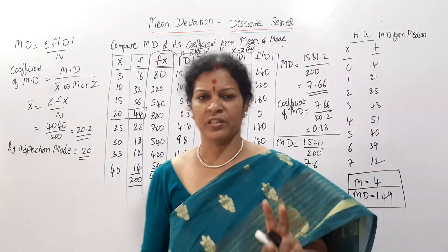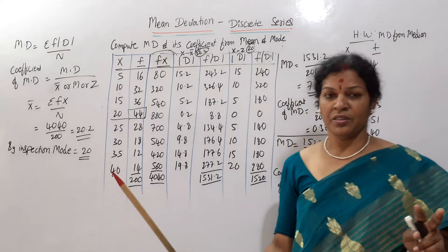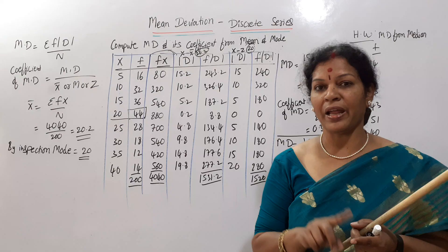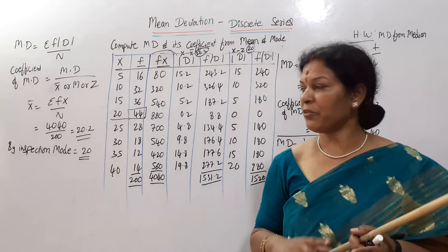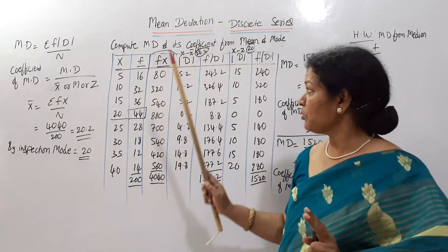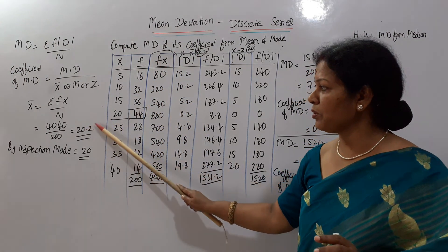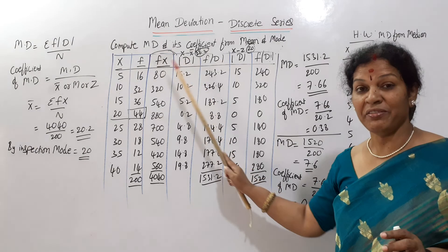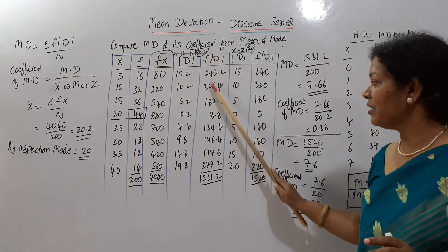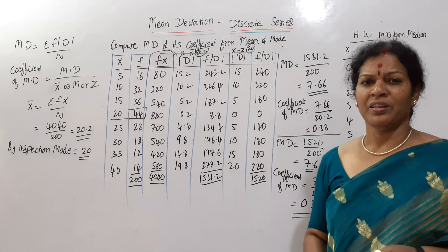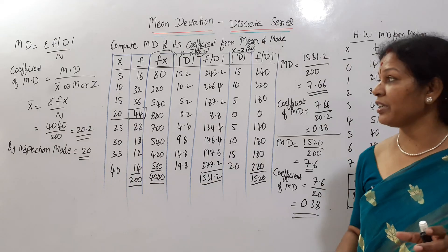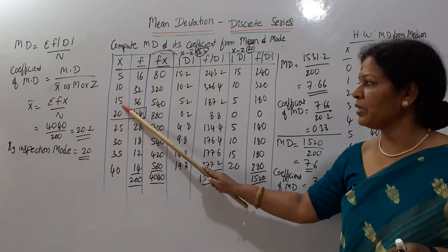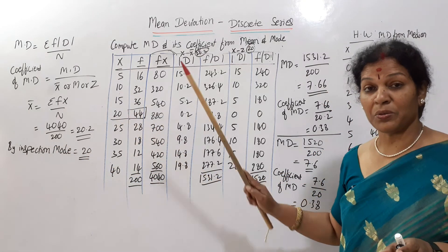Let me explain once again. In discrete series, calculate whatever they are asking — from x-bar and mode. x-bar formula is sigma fx by n. After calculating x-bar, take deviations, then multiply mod d with frequency to get f into mod d. For mode, it is the most frequently occurring number — here 44 is the highest frequency, so mode = 20.